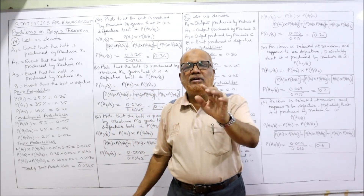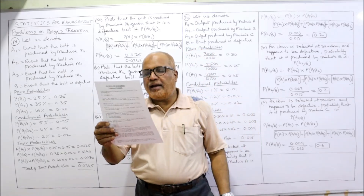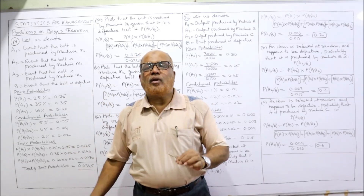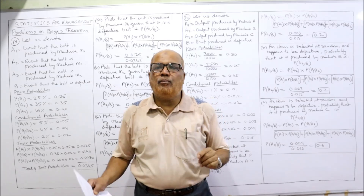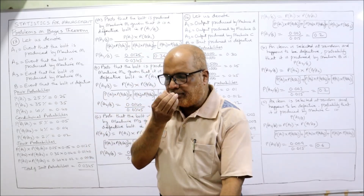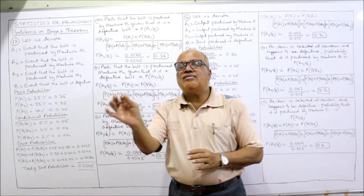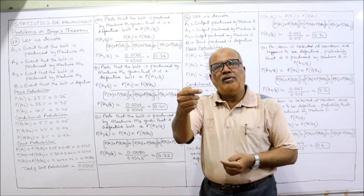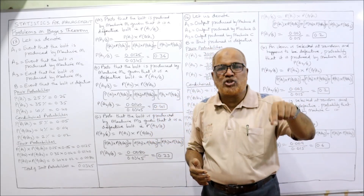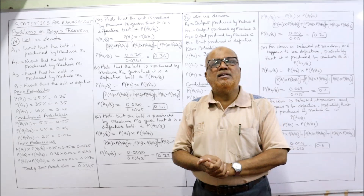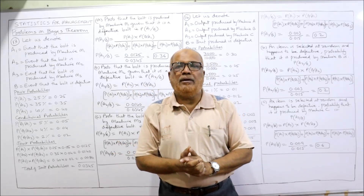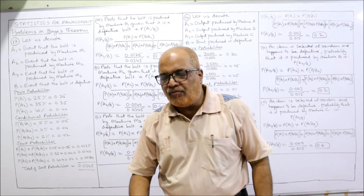The proportion defective is different for M1, M2, and M3. One bolt is drawn at random and is found to be defective. What is the probability that it is manufactured by machine M1, M2, or M3? We have to calculate P(M1|B), P(M2|B), or P(M3|B), where B means defective bolt.